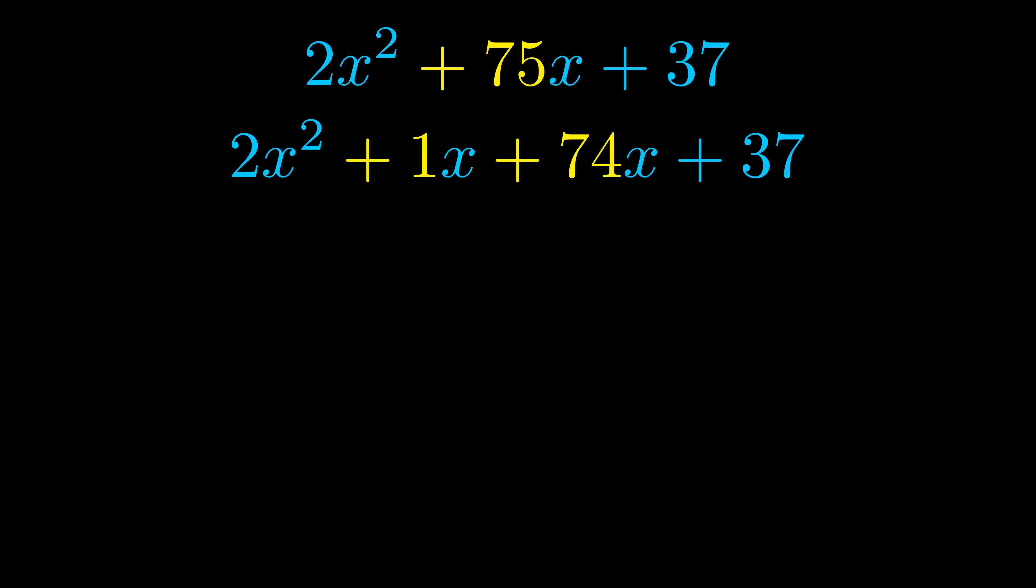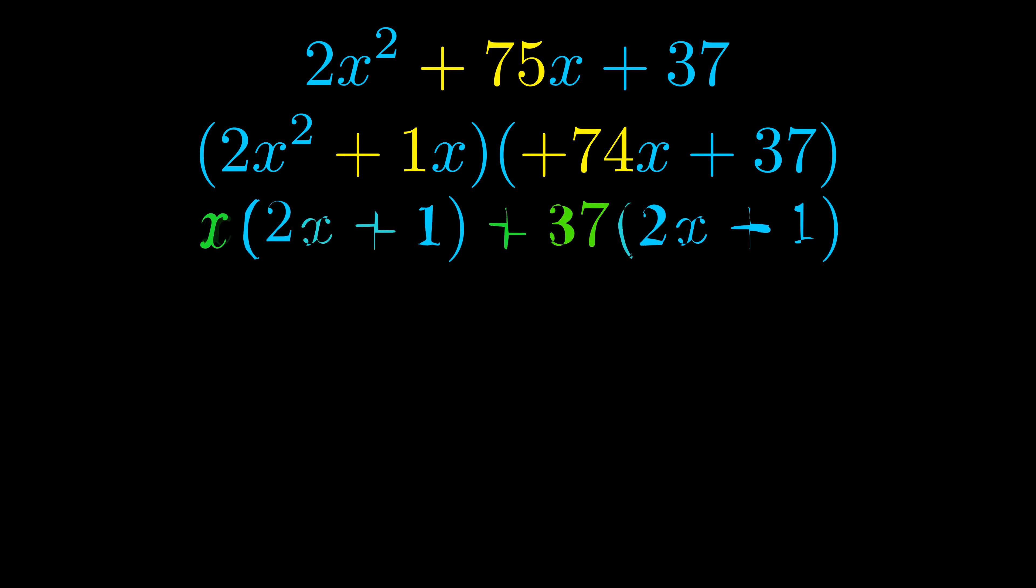Once we've done this, we put parentheses around the first term and the last term, and we do that so that we can take the greatest common factor out of both terms. We can see the greatest common factor is now outside in green.